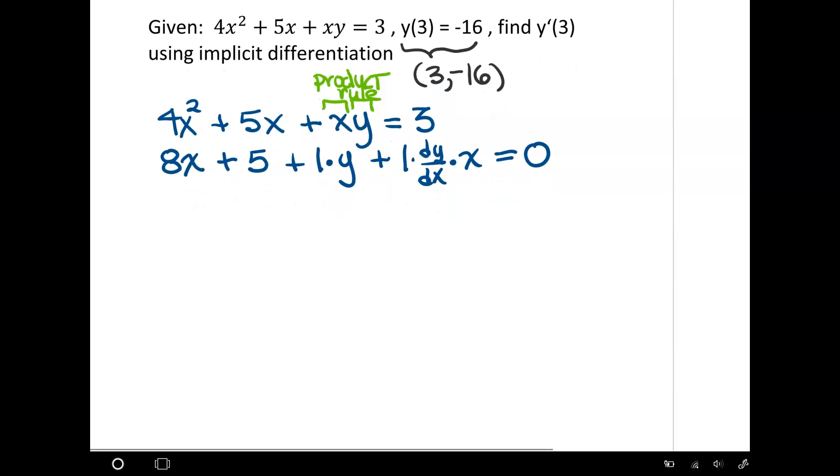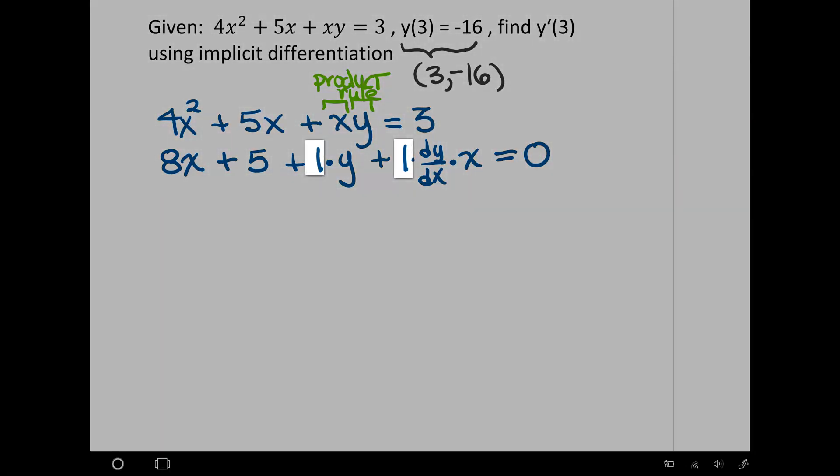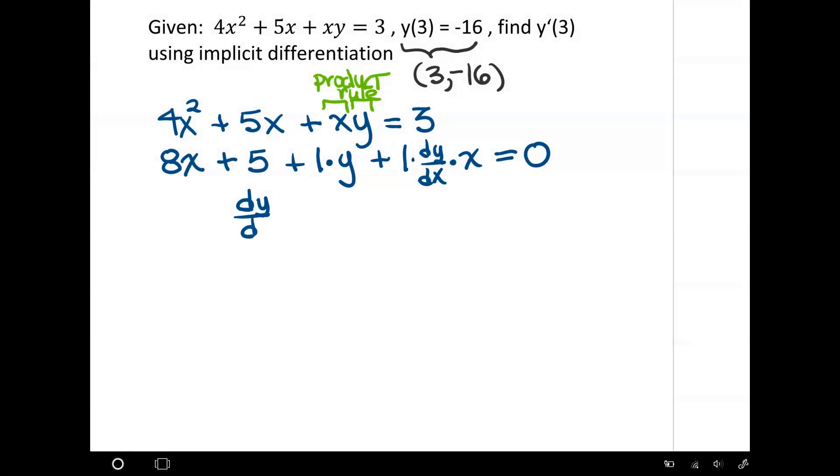Now what we're going to do is solve for dy/dx. I'm basically going to gather any term with dy/dx on one side and throw everything else to the other. So I'm going to push that 8x and 5 and y to the other side. I'm going to drop these 1s, they're not necessary. So I have dy/dx times x equals, and I'm putting 8x to the other side, so it's -8x - 5 - y.